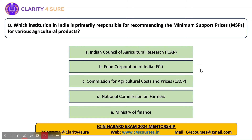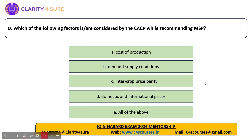Which institution in India is primarily responsible for recommending MSPs for various agricultural crops? The answer is the Commission for Agriculture Costs and Prices (CACP), which works under the Agriculture Ministry. CACP recommends the MSP for various agricultural crops. The factors considered by CACP while recommending MSP include cost of production, demand and supply conditions, inter-crop price parity, and domestic and international prices — so all of the above is the answer.